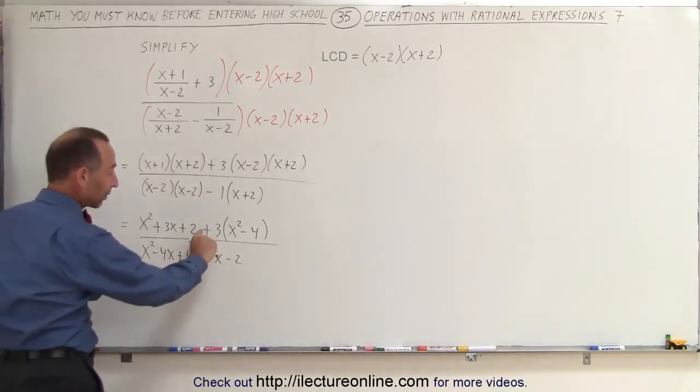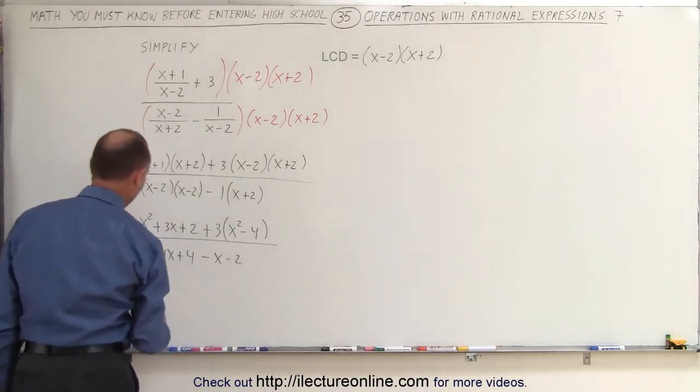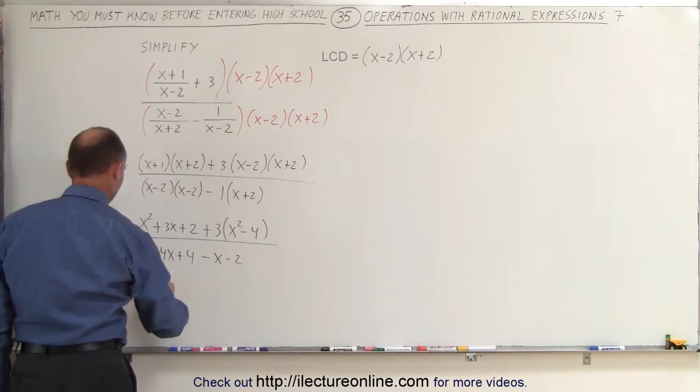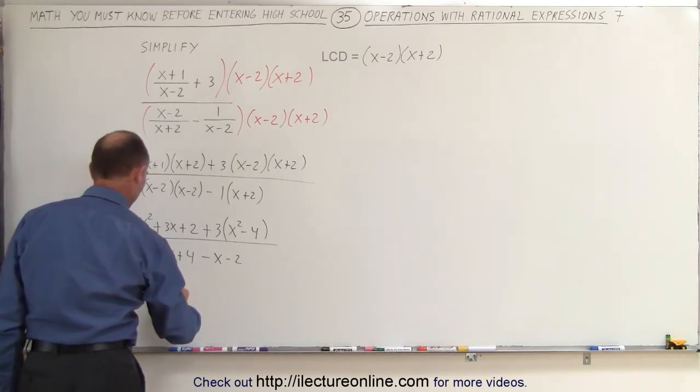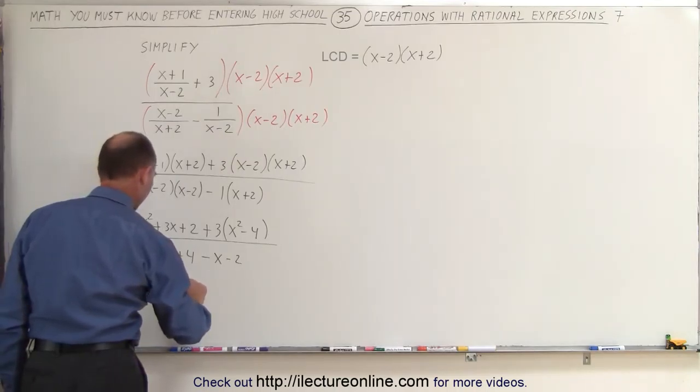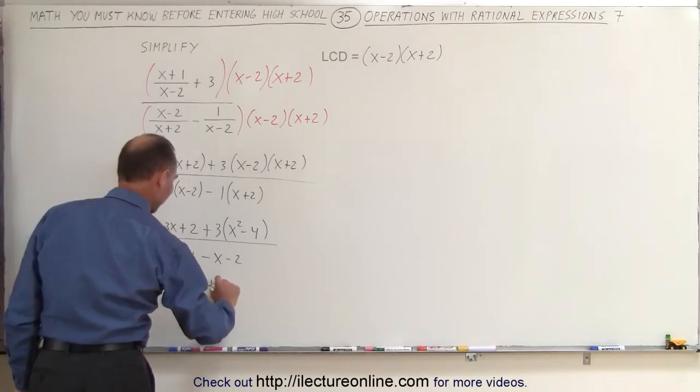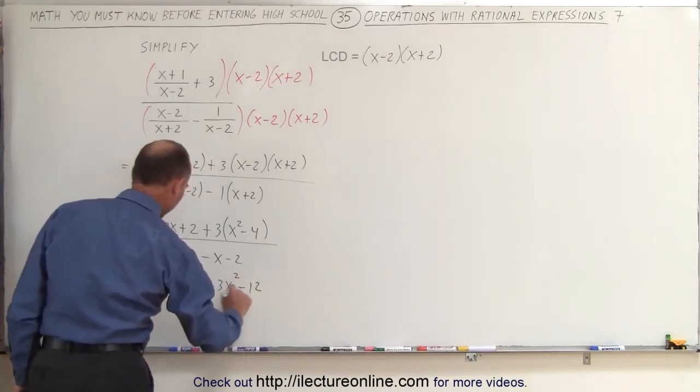Now we still have to combine these together, we multiply this out, see what we get. So this is x squared, not minus, but plus 3x plus 2 plus 3x squared and minus 12.